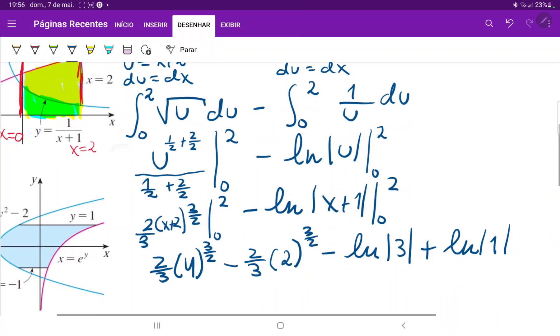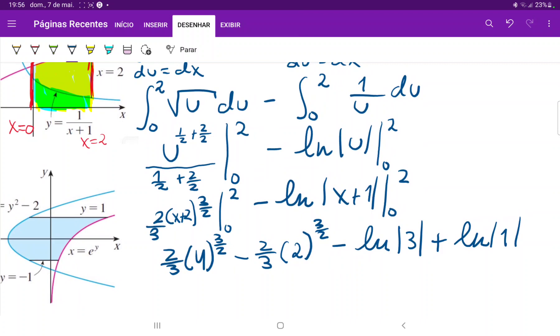So once we have this, all we need to do now is just compute the boundaries. So this is 4 to the power of 1.5, which is 8 times 2 thirds, which is 16 over 3, so 16 over 3, and then minus 2 to the 1.5, minus 2 thirds, and then this is just times 2 square root of 2, right, which is 2 to the 1.5, and then minus ln 3 plus 0.